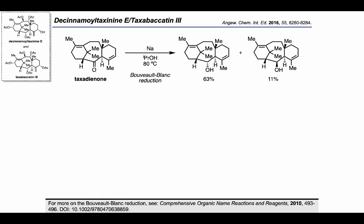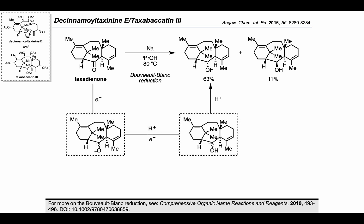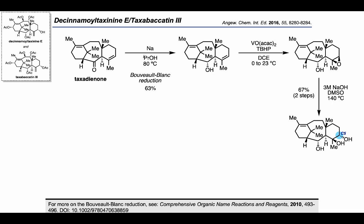In 2016, the group published the total synthesis of these targets in Angewandte Chemie. Starting from taxadienone, they began with a Bouveault-Blanc reduction using sodium and isopropanol, giving a diastereomeric mixture of secondary alcohols favoring the product on the left. This contrasts with what was observed in the 2012 Nature Chemistry paper when taxadienone was treated with lithium aluminum hydride, which had favored the diastereomer on the right. We can envision this proceeding through an initial one-electron reduction of the carbonyl to generate an oxyanion adjacent to a carbon-centered radical, which undergoes protonation and further one-electron reduction to a carbanion, then the product upon a second protonation step.